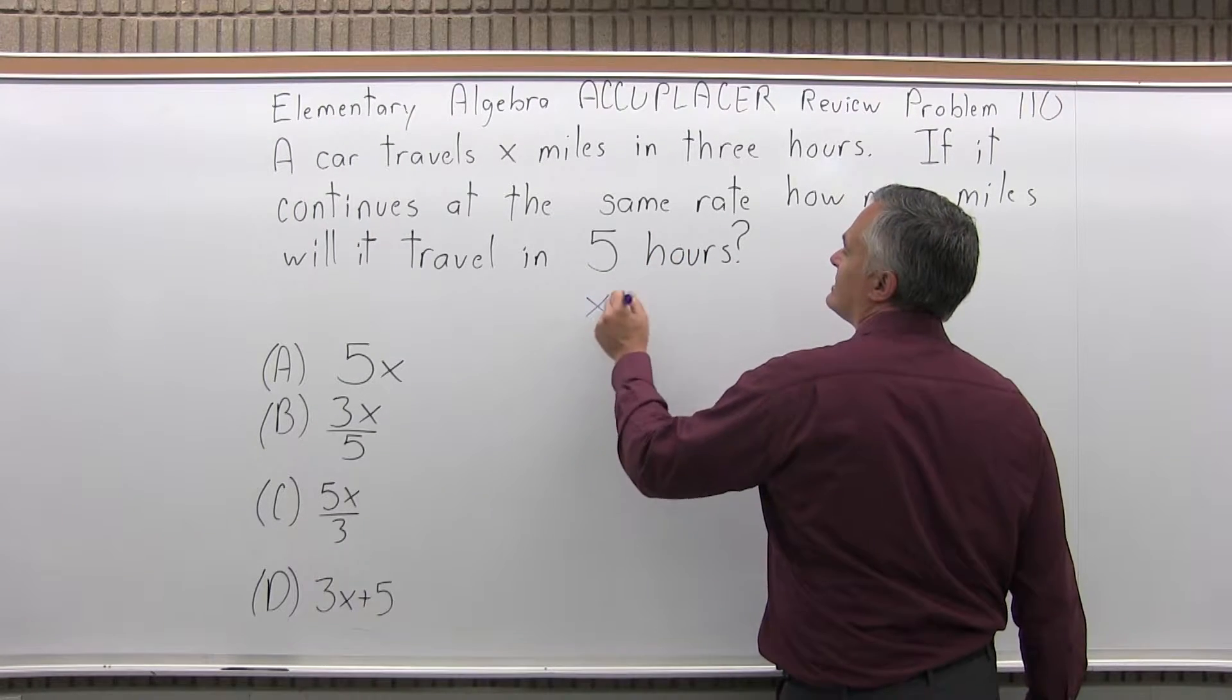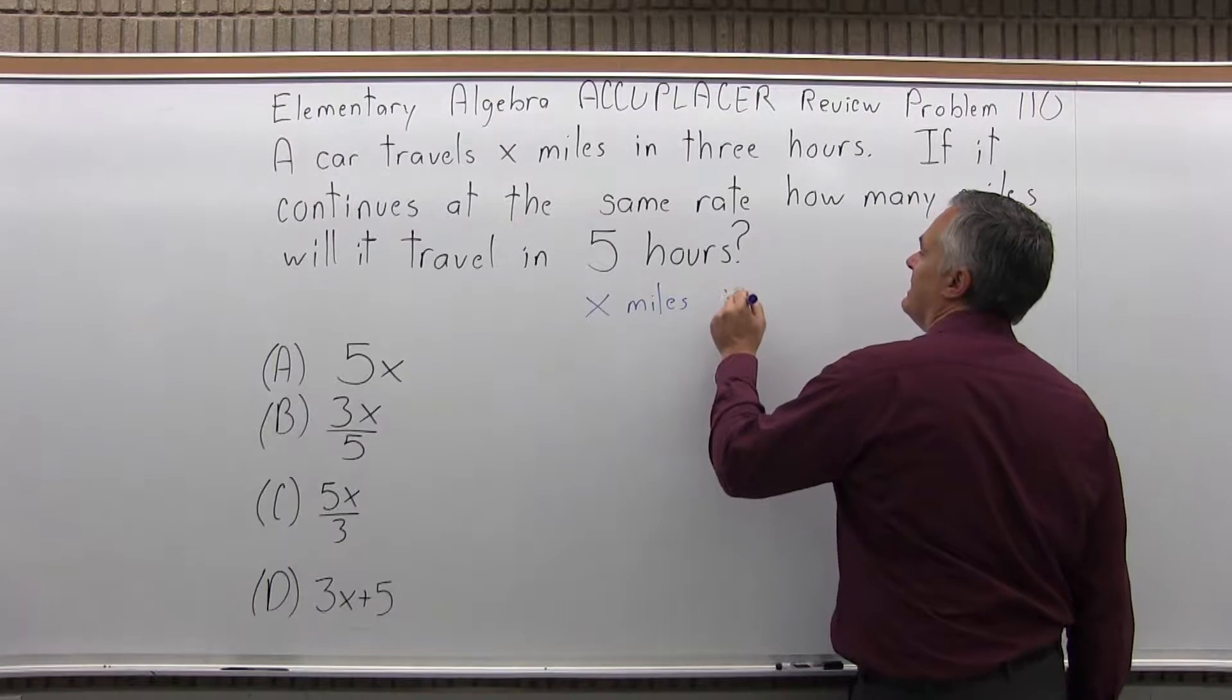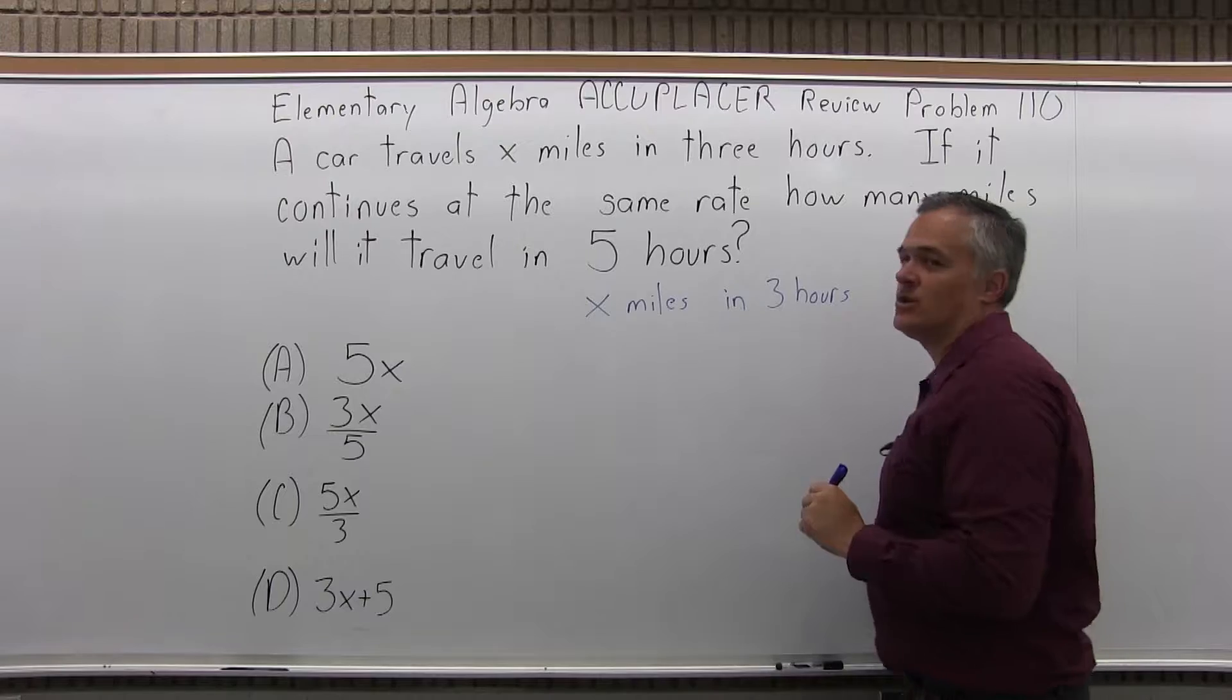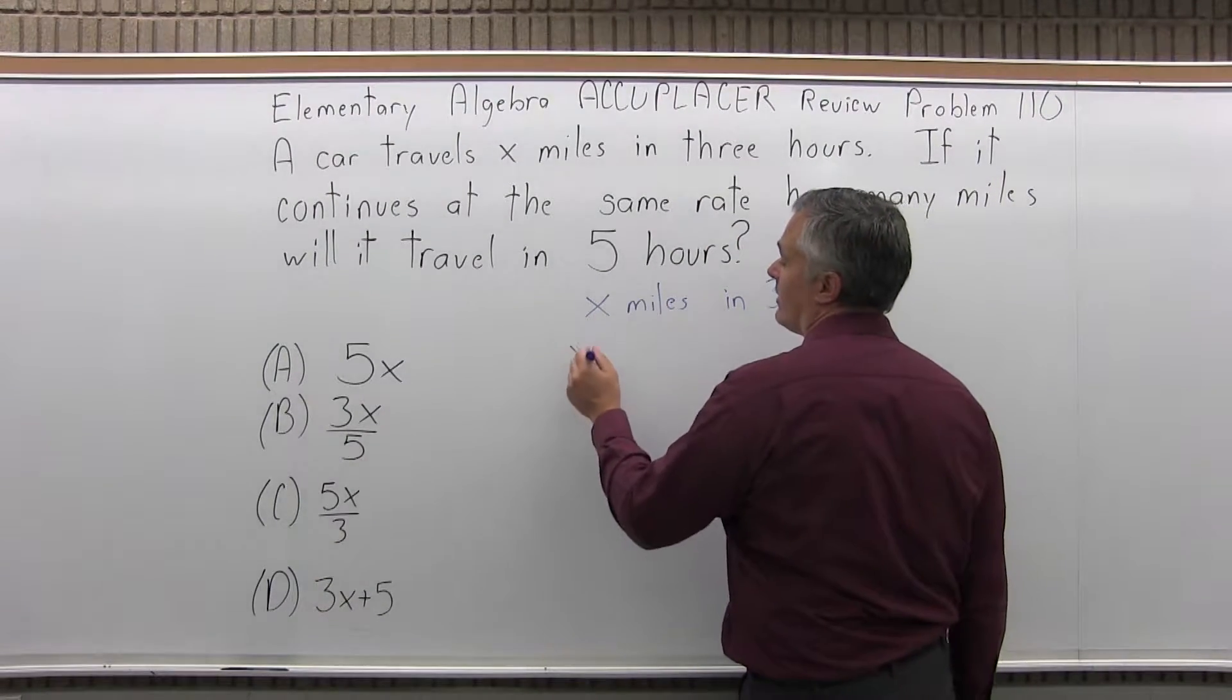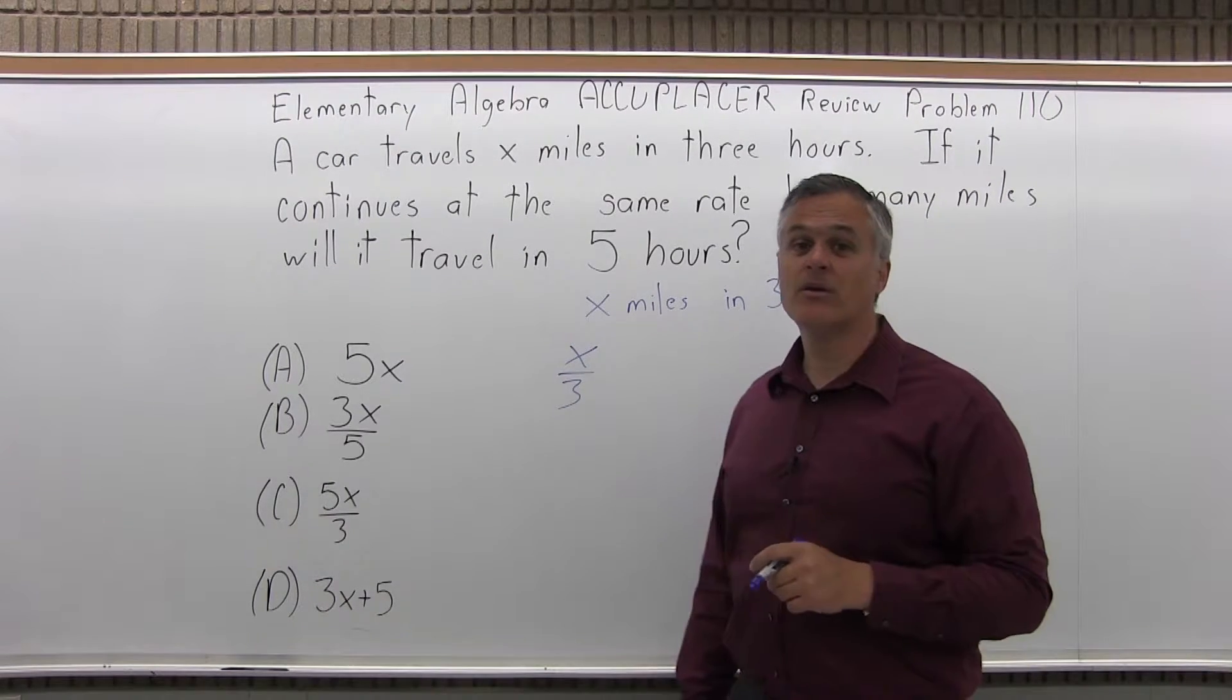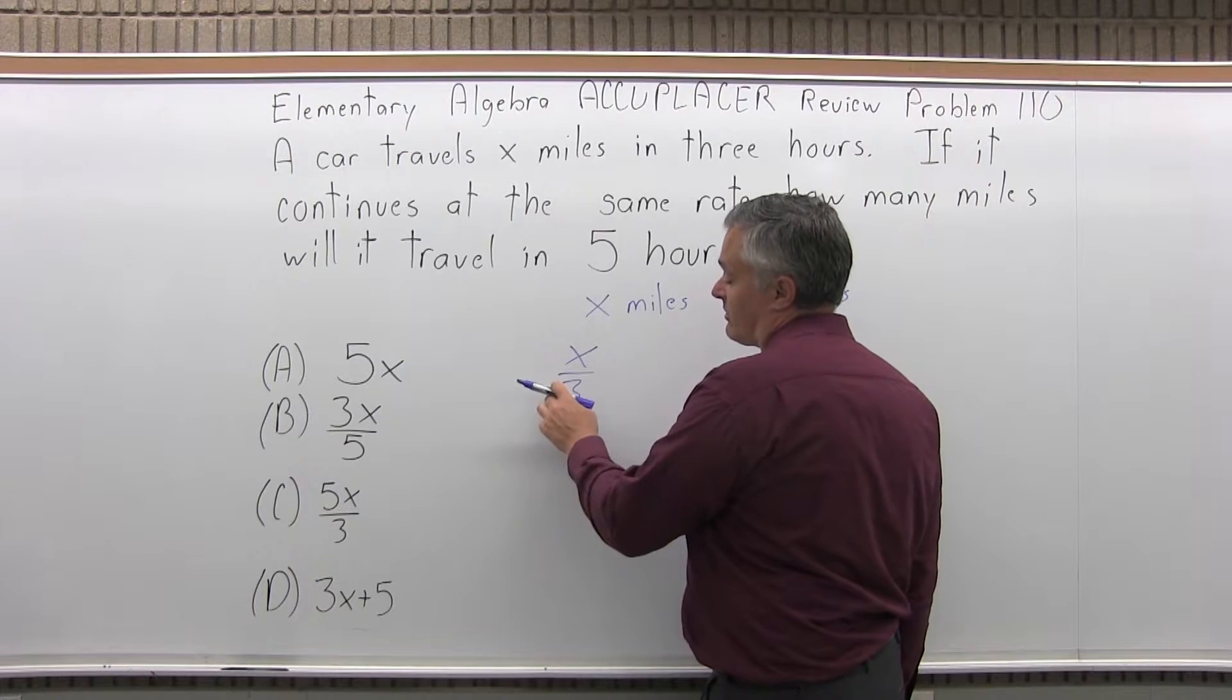So we're going X miles in three hours. That's what's important to know. So what I'd like to know is how many miles per hour the car is going. Miles per hour is X miles in three hours. So the miles per hour is X over three. So in one hour you go X over three miles.